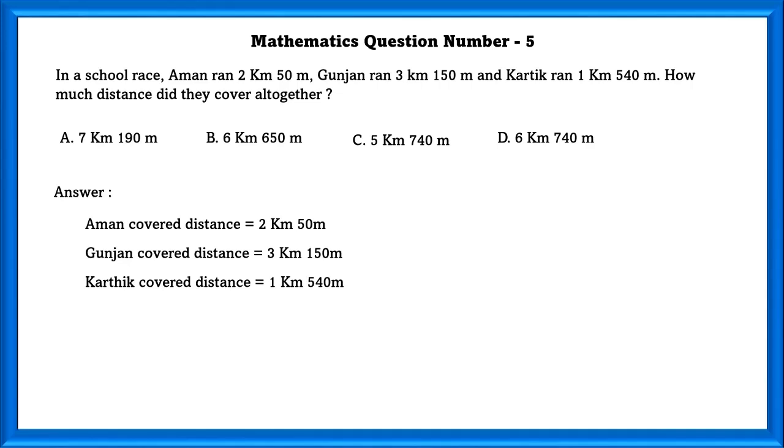In order to do this, we can see that the units are given as kilometer and meter. In order to add, we have to make sure that the unit is the same. So we will convert all this to meters and then add. If we add, we will get 6740 meters, which can be written as 6 kilometers 740 meters.